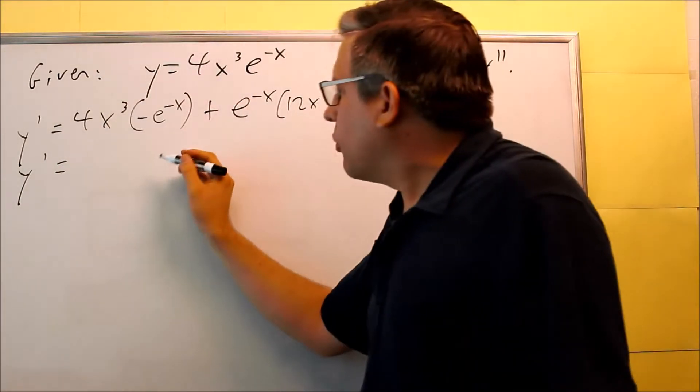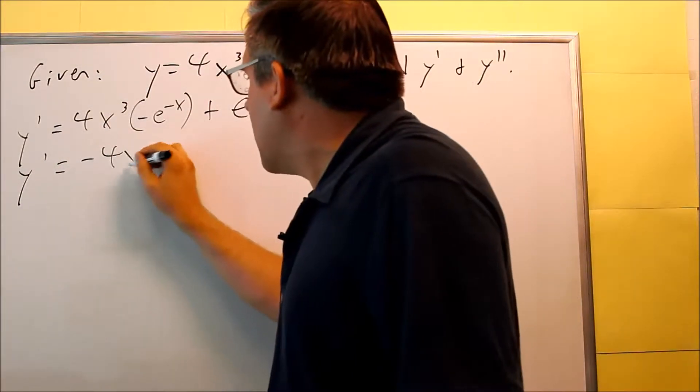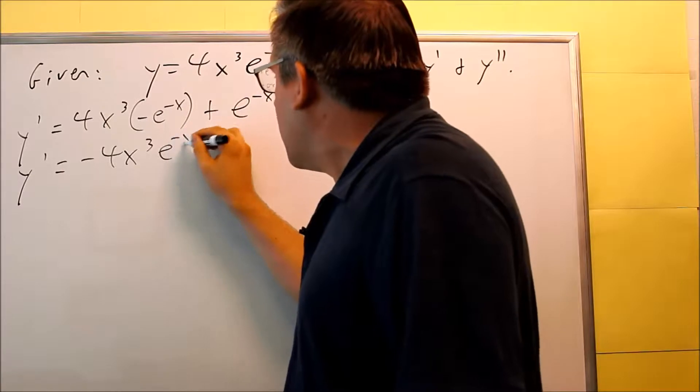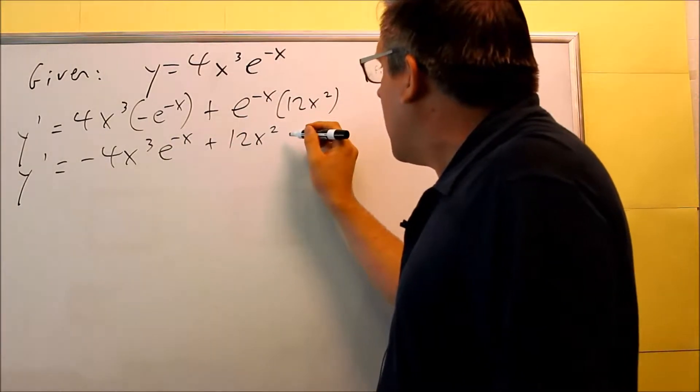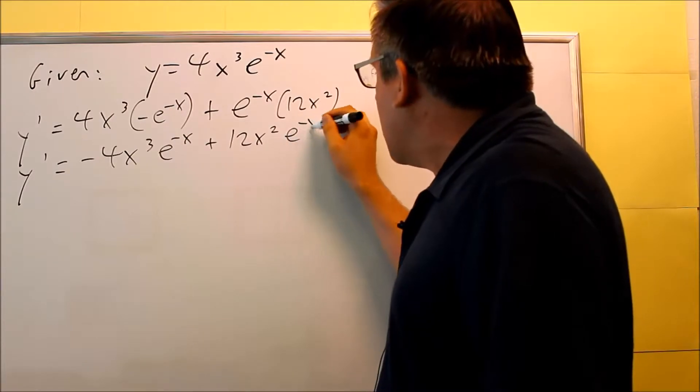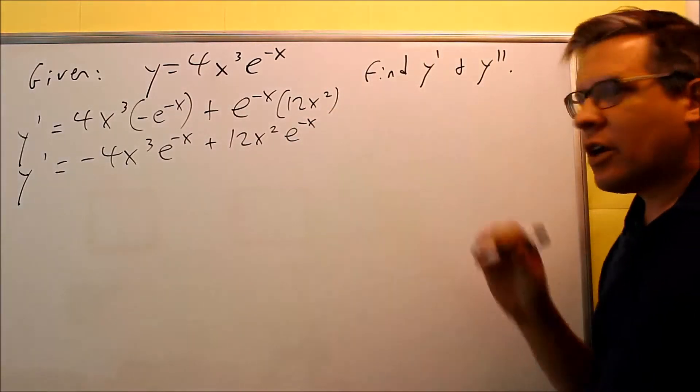For simplifying, the only thing we can really do is put the negative on the outside here. And then over here we'll put 12x² out front, and then e^(-x). And then that's about it for simplifying.